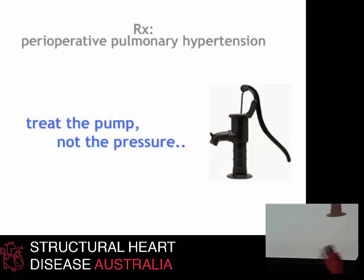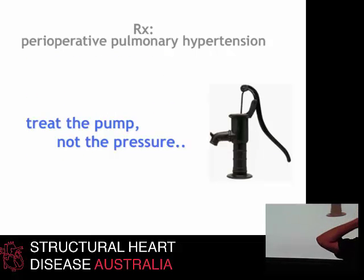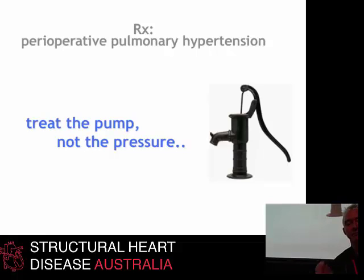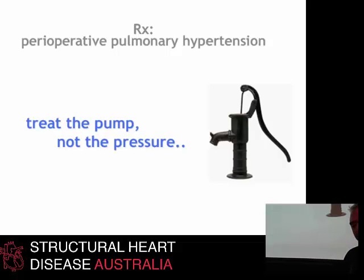I think this is really the key message for pulmonary hypertension: it's very easy to think about the number — the mean pulmonary arterial pressure — and what that means for risk stratification. But what's really important is that we don't just think about the level of pulmonary arterial pressure; we think about how well the RV is doing. Treat the carpenter, not the pressure. Thank you.